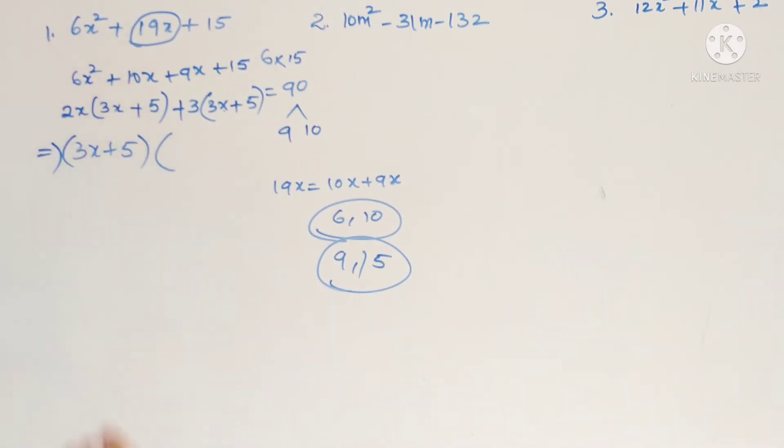So what is the remaining? 2x plus 3. So this is the factorization.